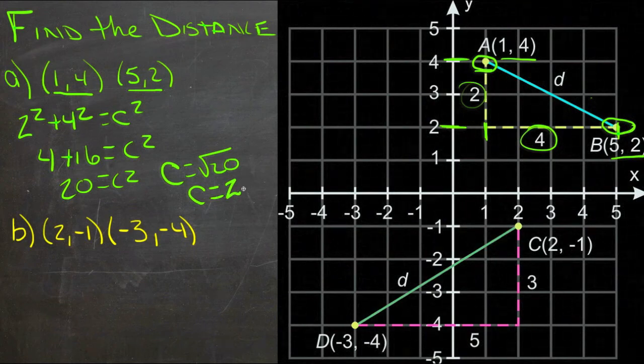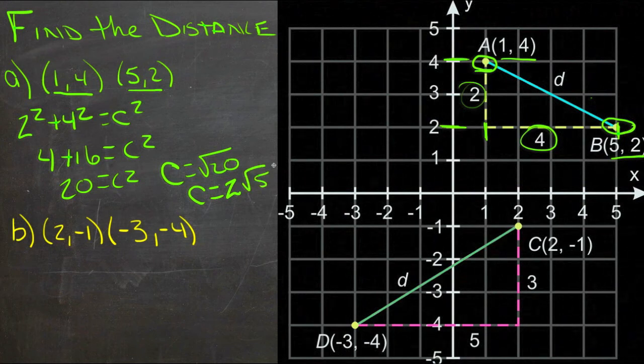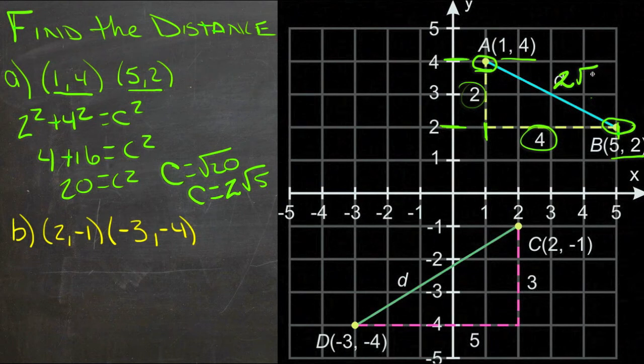Pull out the square root of 4, not the square root of 5. 2 square roots of 5. So this length here then is 2 square roots of 5. And that's the distance between this point and this point.